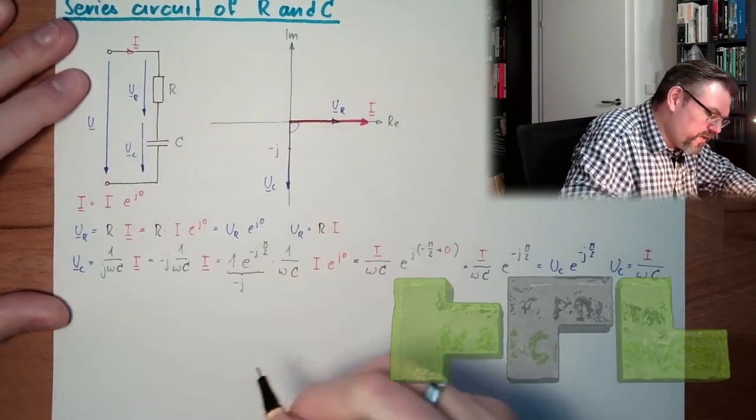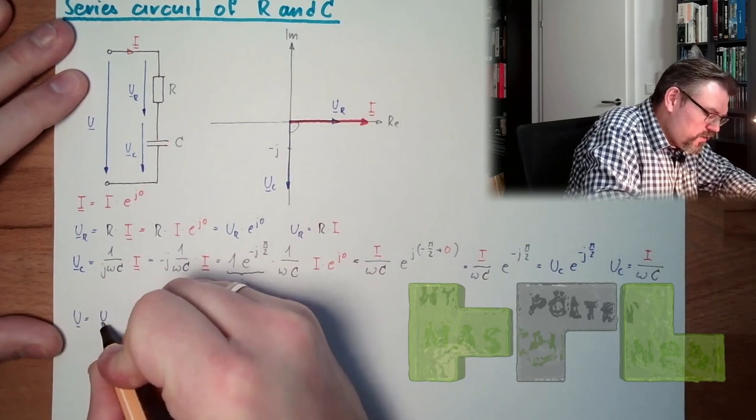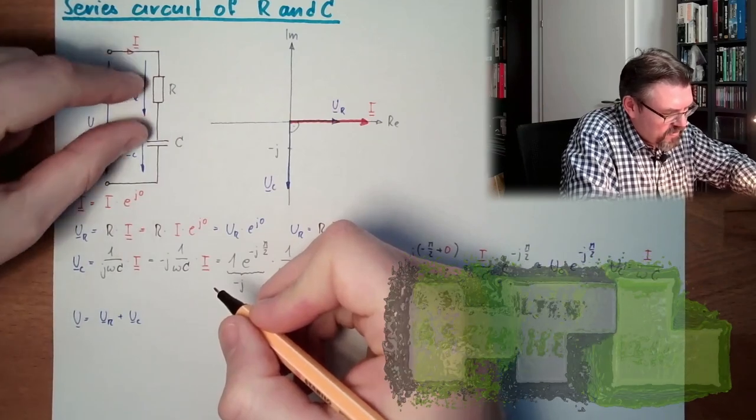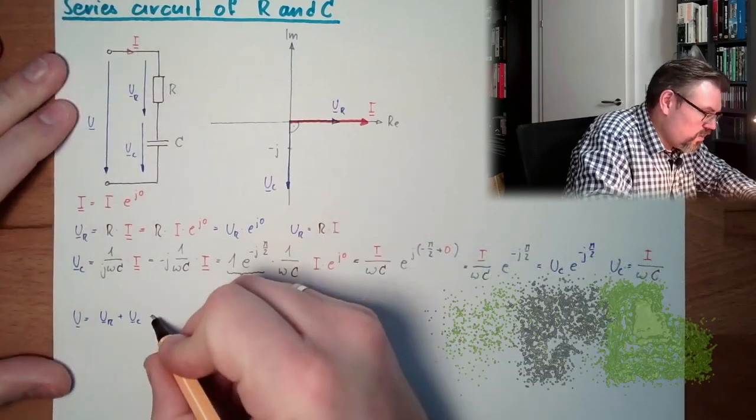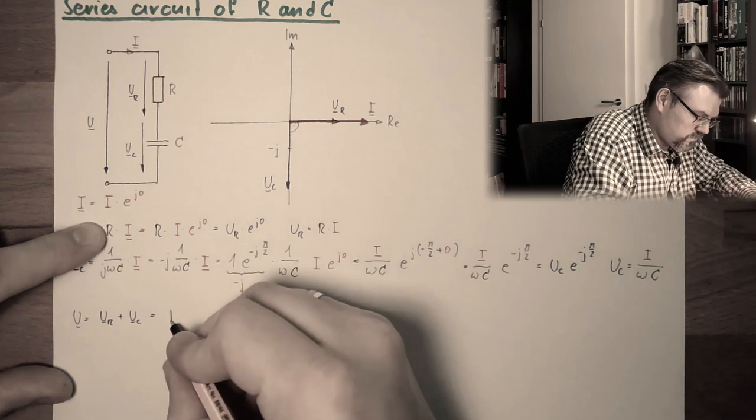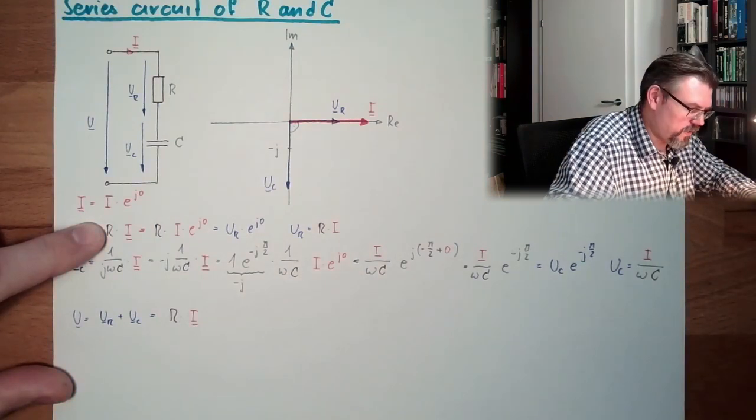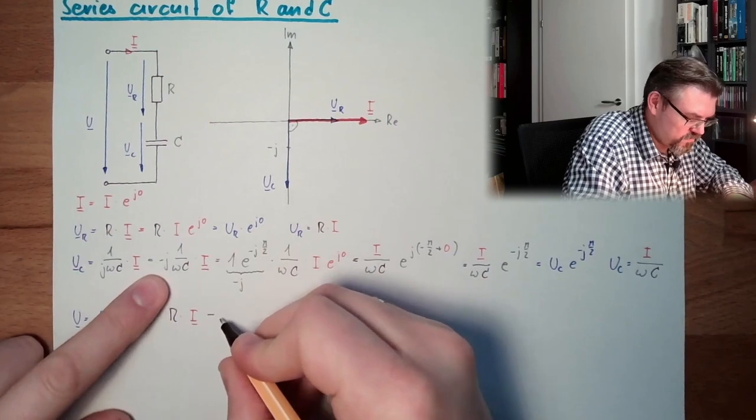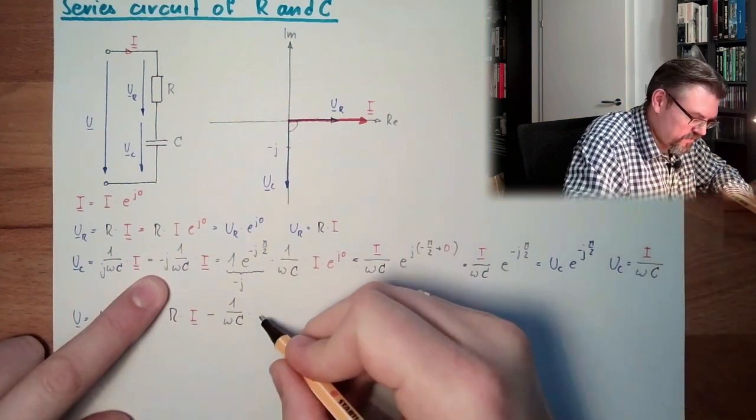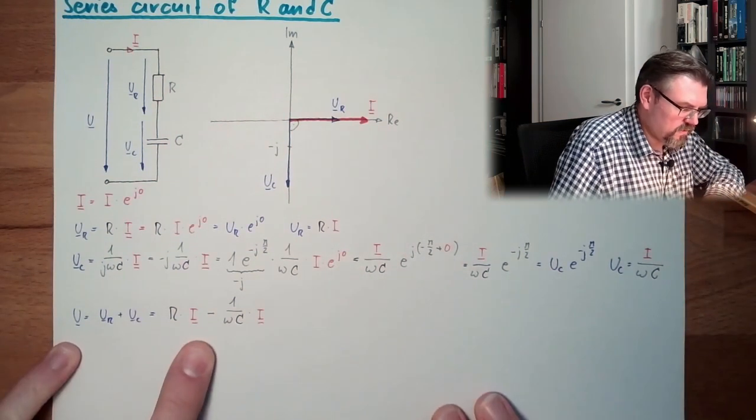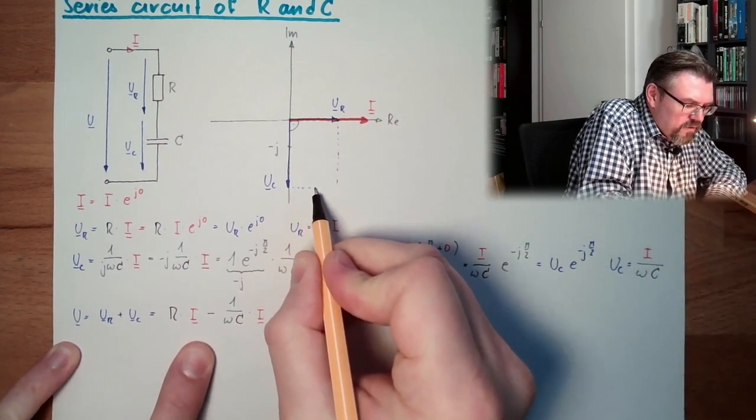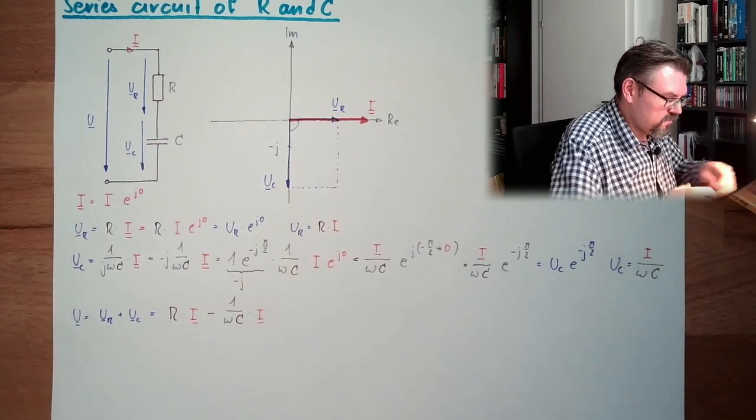And now, what is our complete voltage? U equals UR plus UC. Think about the loop. This must be this and this together. So, we have R times I plus minus j, minus 1 divided by ωC times I. Alright. That's it. Actually, if I would draw this here, it would look like that. Vector addition here.